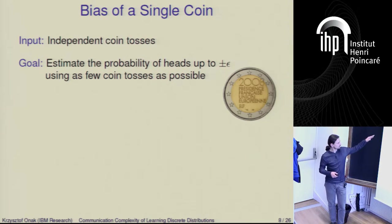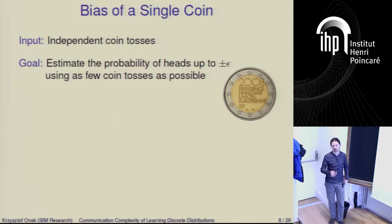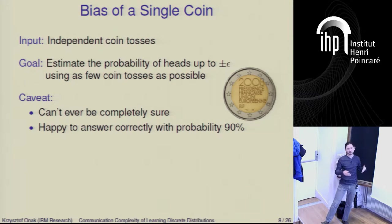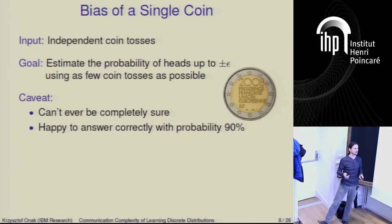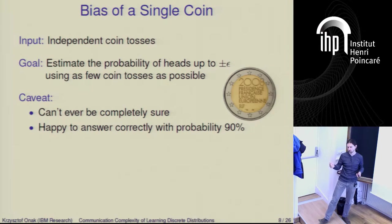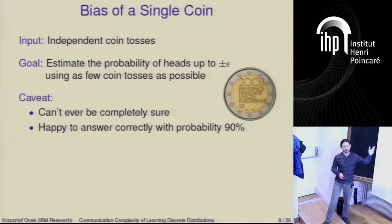Let's start from this warm-up of a single coin. You have a coin and toss it multiple times, and you want to estimate the probability of heads. How many samples do you need? First, you can never really be sure if what you output is actually accurate, because the coin could be heavily biased towards heads and you might be very unlucky and see all tails. Unless the probability is 1 or 0, you can never be certain your output is correct. So it suffices that we output the correct answer with high constant probability, say 90% or 99%.